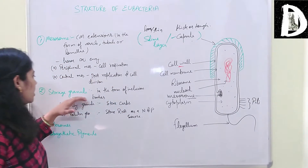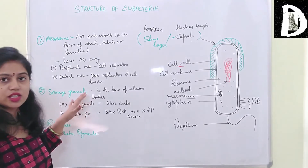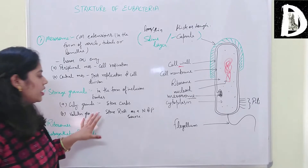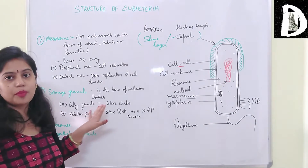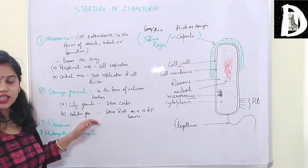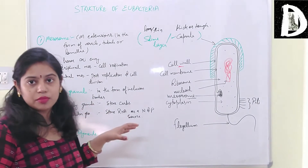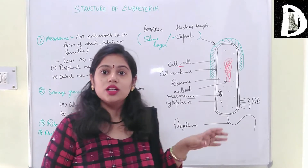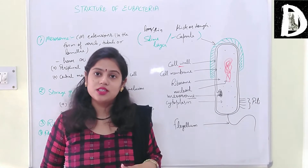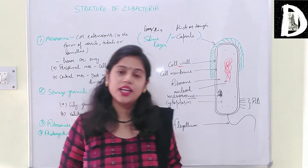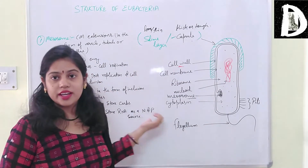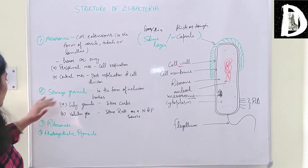The next structures are storage granules. These can be glycogen granules, which store carbohydrates. Next are volutin granules, which store RNA and protect it, and serve as a source of nitrogen and phosphorus, which are very helpful nutrients.